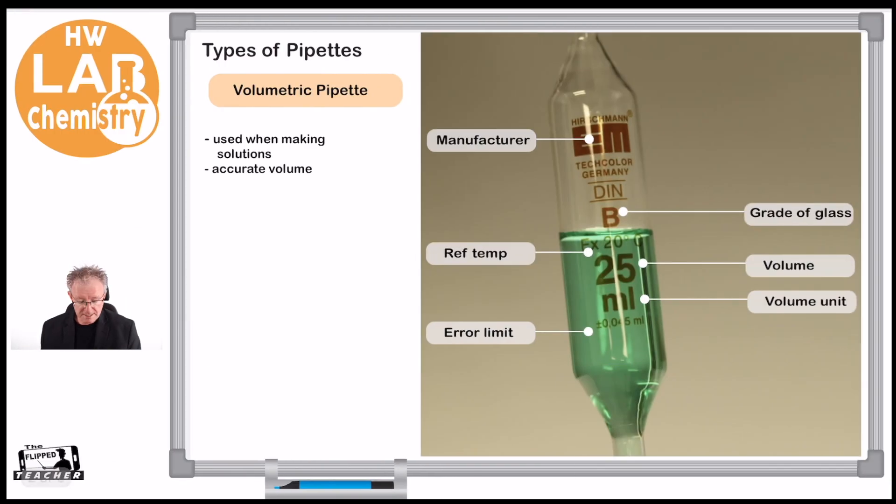Okay, well our volumetric pipettes are designed for making solutions. So if you're doing senior chemistry, you want to make sure you've got a very specific concentration, and to do that you need to use these types of pipettes. They're very accurate.